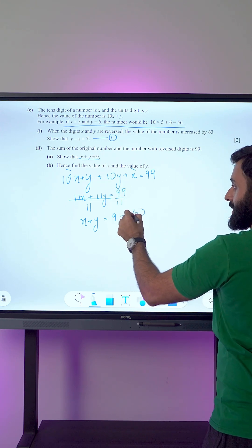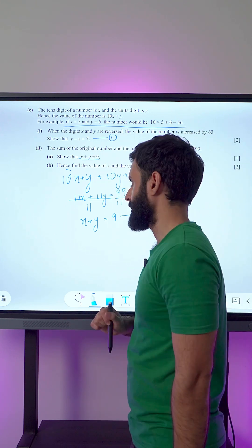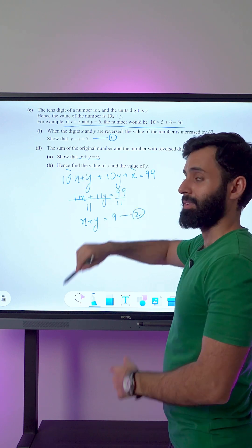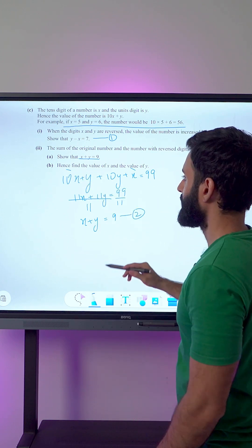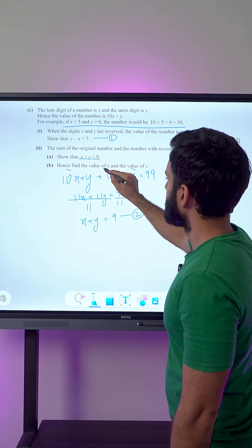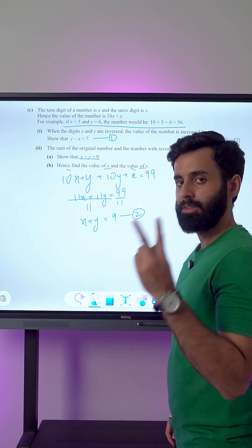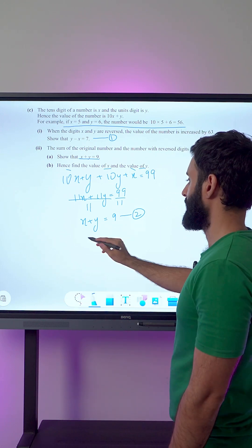This was our first equation and this is our second equation. Hence, we have to use the previous part to find the value of x and y. Two unknowns, two equations - that's all we need.